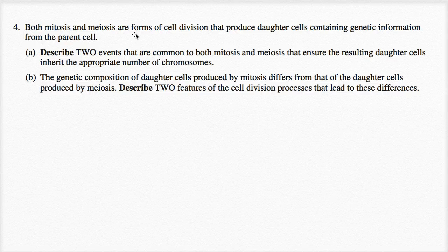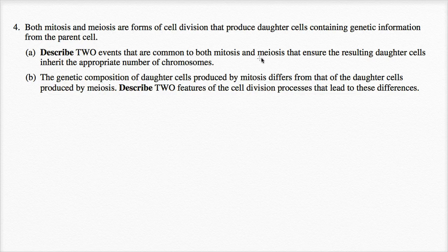Both mitosis and meiosis are forms of cell division that produce daughter cells containing genetic information from the parent cell. Part A: describe two events that are common to both mitosis and meiosis that ensure the resulting daughter cells inherit the appropriate number of chromosomes.